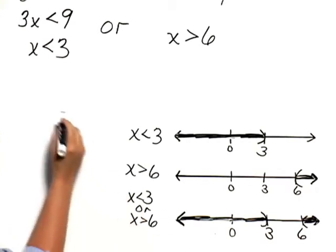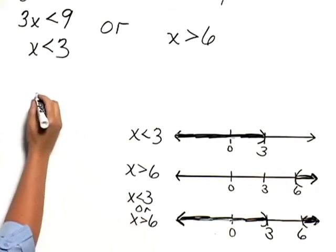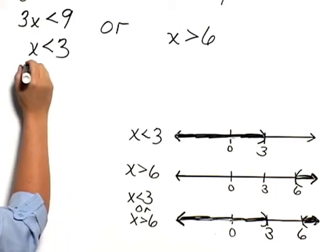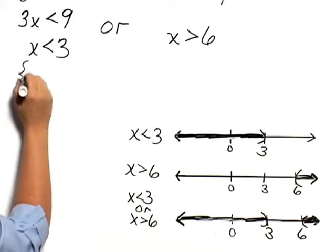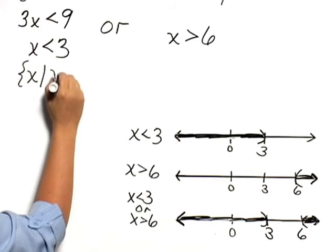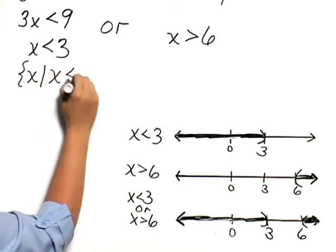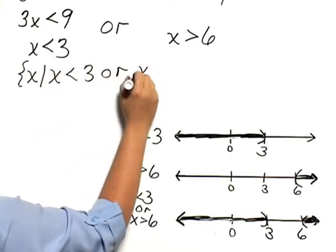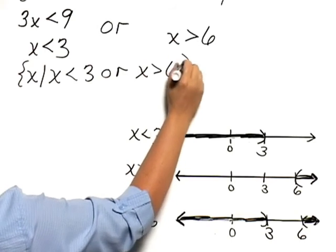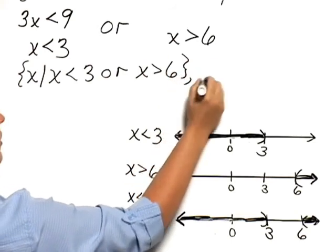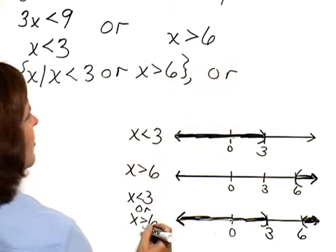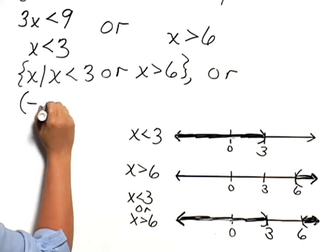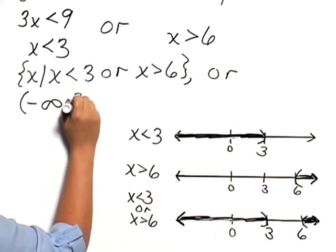So we can write that using set builder notation as the set of all x such that x is less than 3, or x is greater than 6. Or we can write that with intervals as the union of the interval from negative infinity to 3, and the interval from 6 to infinity.